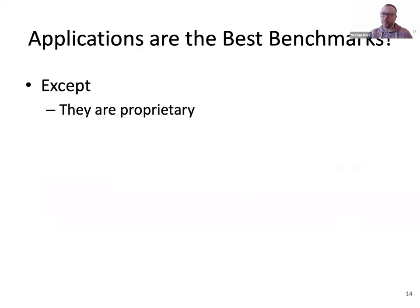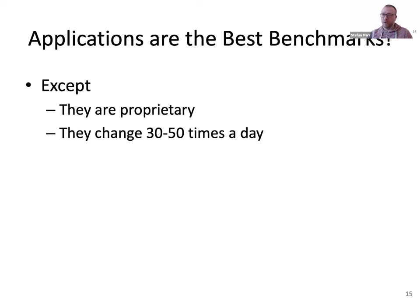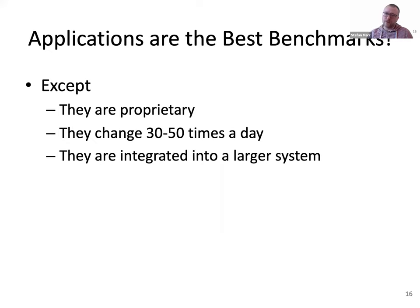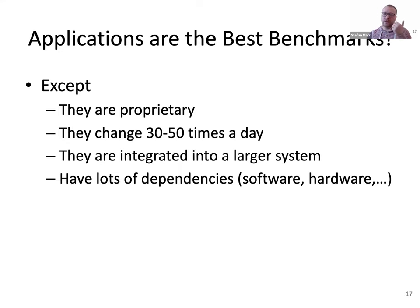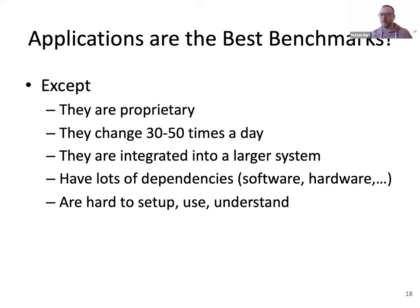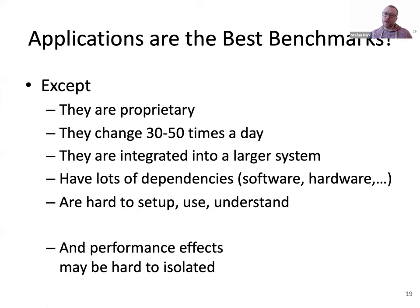A lot of people argue that real applications are the best benchmarks, and of course they are — but they're proprietary, so we typically don't have access to them. They change 32 to 50 times a day, which is a constantly moving target — not ideal for research. They're also integrated in larger systems with lots of library dependencies, hard to set up, hard to use, and hard to understand. And because they run integrated into other systems, isolating any performance effects from a research idea is also hard. So even if they are the best benchmarks, they're not ideal in a research context.